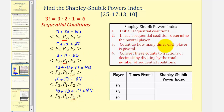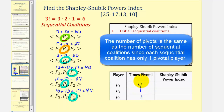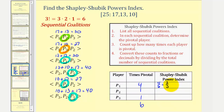Now we'll count how many times each player is pivotal. Player one is pivotal four times. Player two is pivotal once, and player three is also pivotal once. Notice the sum of pivots is six. So the Shapley-Shubik Power Index for player one is four divided by six, or two-thirds, which as a percentage is approximately 66.7%.